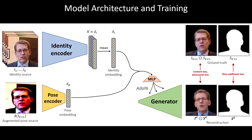We have found that our system learns pose descriptors that are almost person-agnostic, and passes all person-specific information through the identity encoder. This is achieved solely by limiting the capacity of the pose encoder block and making it much smaller than the capacity of the identity encoder.